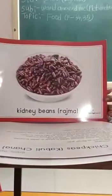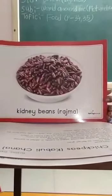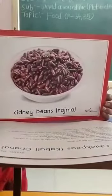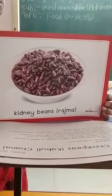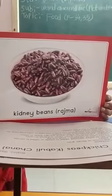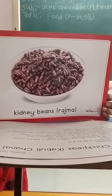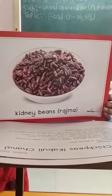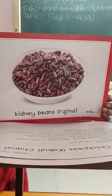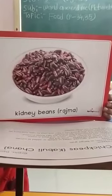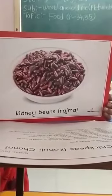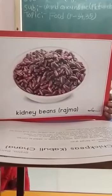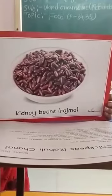These are kidney beans — rajma. These are also known as rajma. These are pulses. These are reddish brown in color. Rajma can be used to make curry, salads, etc.